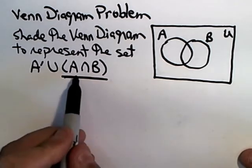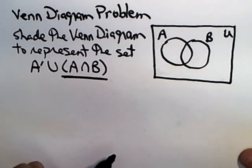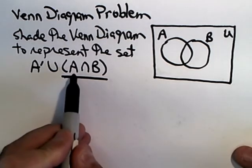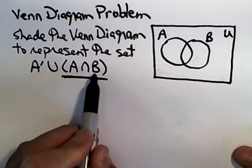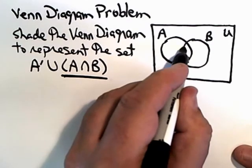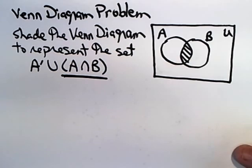So the first thing I want to deal with is A intersect B. We've done this many times — that just means the area where A and B overlap, which would be inside of there. So that's A intersect B.